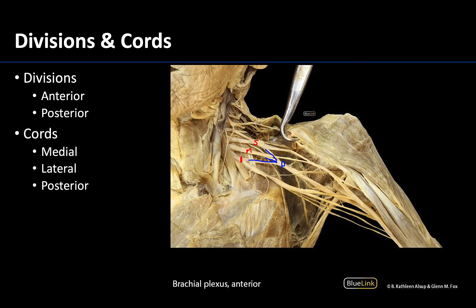The anterior divisions of the superior trunk as well as the middle trunk will come together to form the lateral cord. So the anterior divisions of the superior trunk and the middle trunk combine to form the lateral cord.